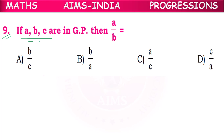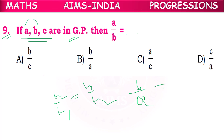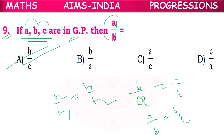Ninth question: If a, b, c are in GP, then what is a/b? In a GP, the common ratio means T2/T1 = T3/T2, so b/a = c/b. Taking reciprocals, a/b = b/c. Therefore a/b = b/c, and option A is correct.